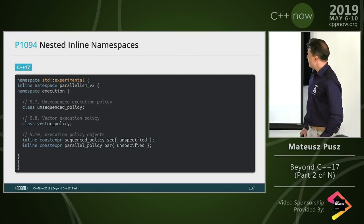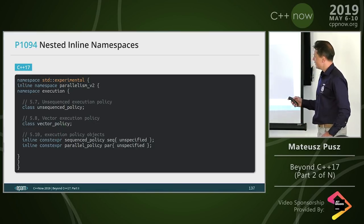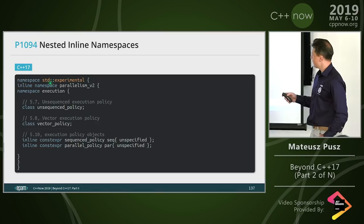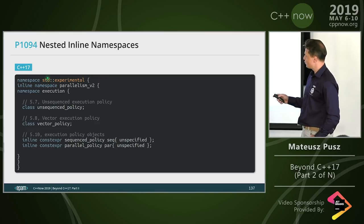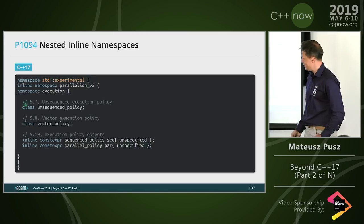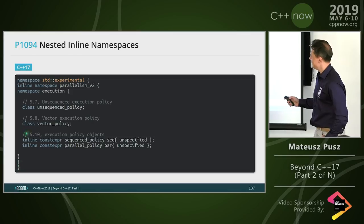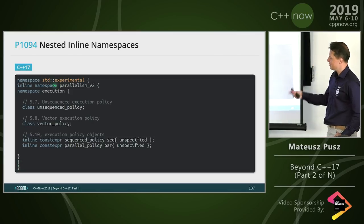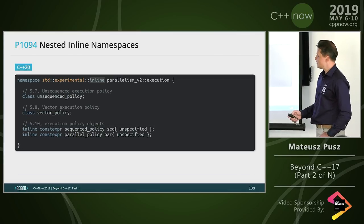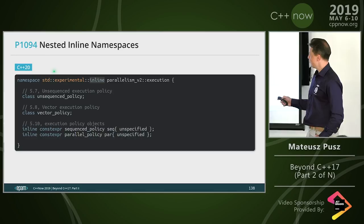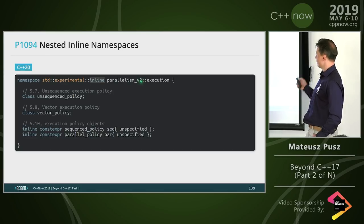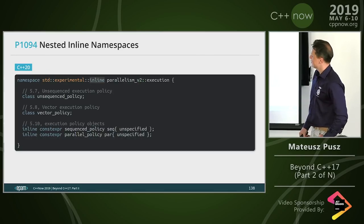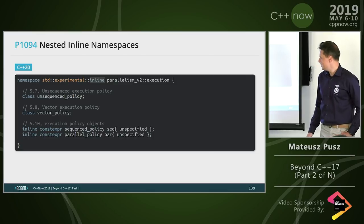Another small language feature: we'll be able to nest inline namespaces in one line. Right now you have to write many separate lines with many closing braces, but with C++20 you'll be able to write them in one long line — for example `std::inline std::experimental` — which makes life easier for library vendors.